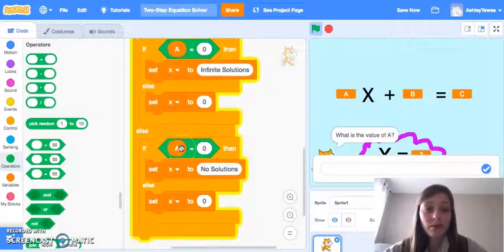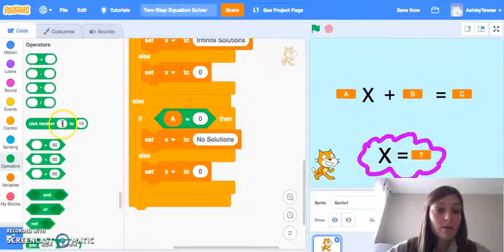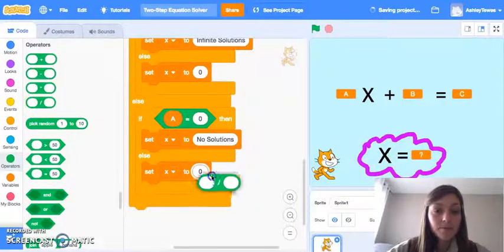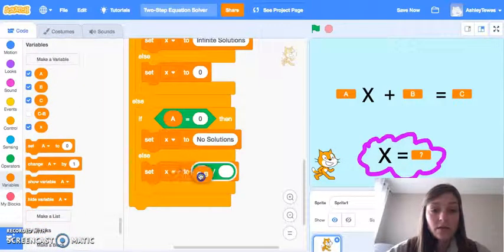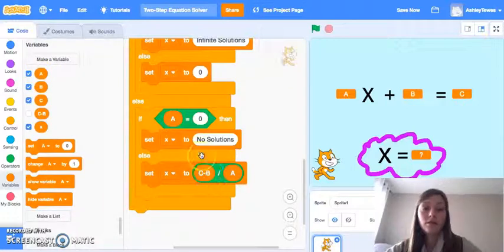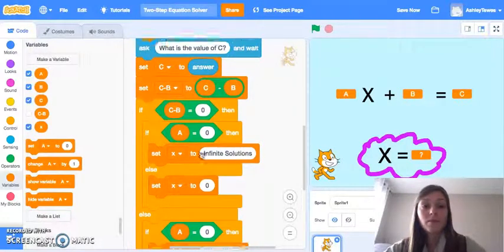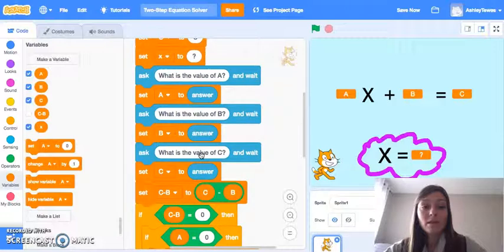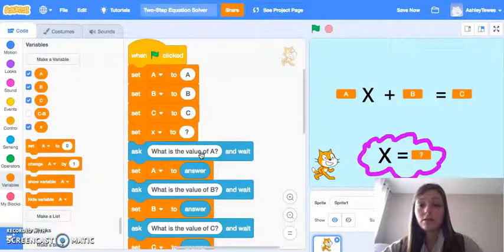However, if C minus B is not equal to zero, and A is also not equal to zero, we're going to come back to operators here. And we're going to take our C minus B value, as we stated, and we're going to divide this value by A to solve for X. And this is our entire program. So again, the key to this program is running this flowchart ahead of time with your students to think up all of these situations. That's where the computational thinking really comes in.